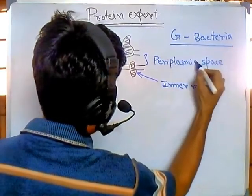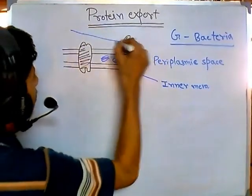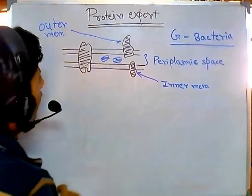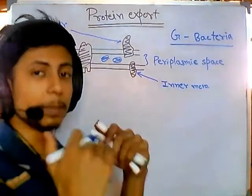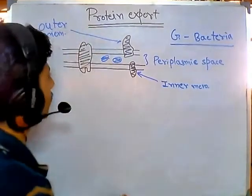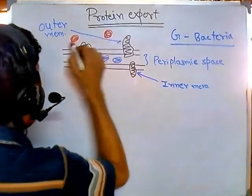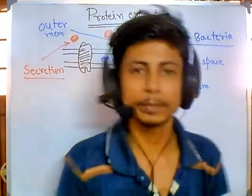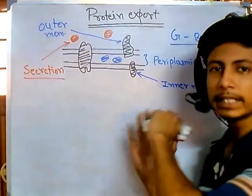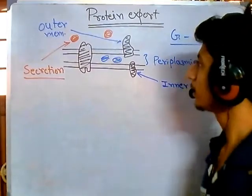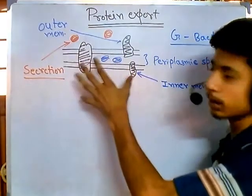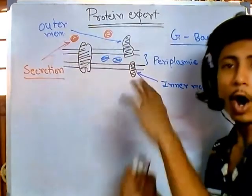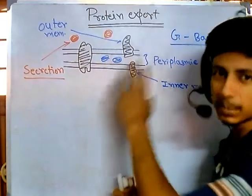The periplasmic space is a valid destination, and the outer membrane is also a possible location for proteins. These are the three major membrane-associated regions. The fourth destination is completely outside the cell into the surroundings, which is called secretion. When we talk about protein export, it covers all four scenarios: inner membrane, outer membrane, periplasmic space, and outside the cell.